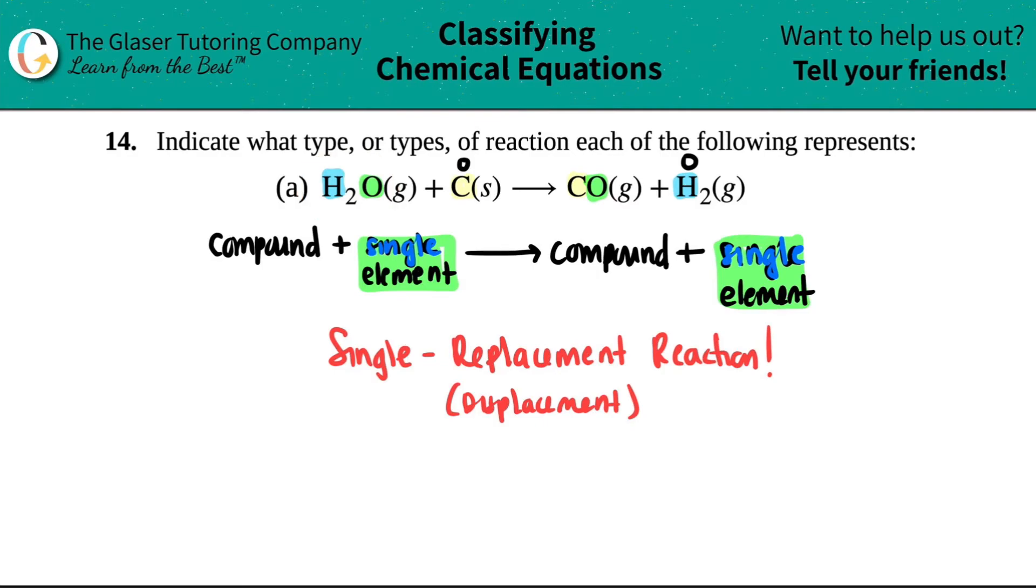When we make compounds, remember we always had charges. That's how we formed a compound - we took the charges and we crisscrossed them down. Remember the crisscross method?